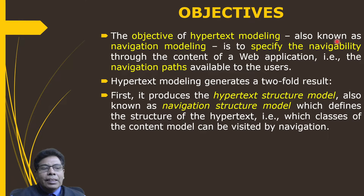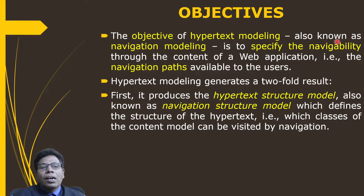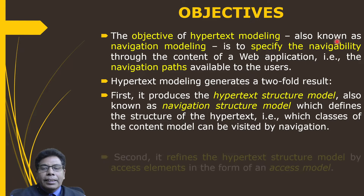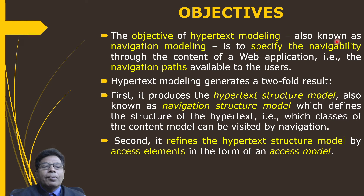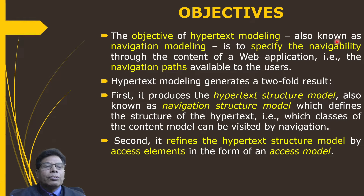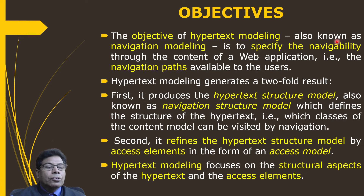The navigation structure model defines which classes of the content model can be visited by navigation. Second, it refines the hypertext structure model by adding access elements in the form of an access model. So hypertext modeling focuses on the structural aspect of the hypertext and the access elements.